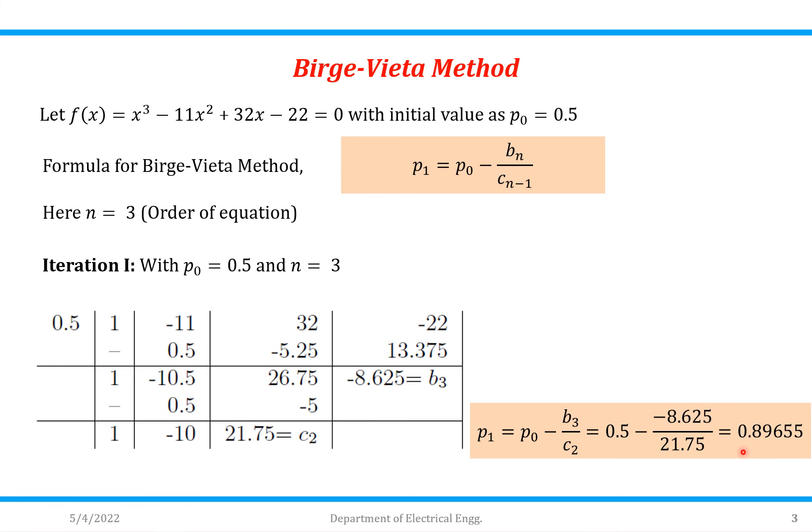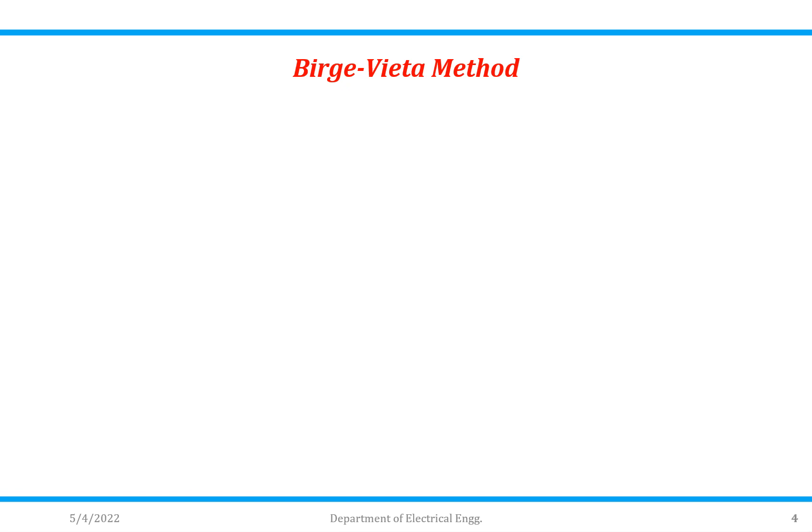Now for second iteration we have to use 0.89655 as initial guess for the calculation. So same method we have to follow here with p₀ = 0.89655.